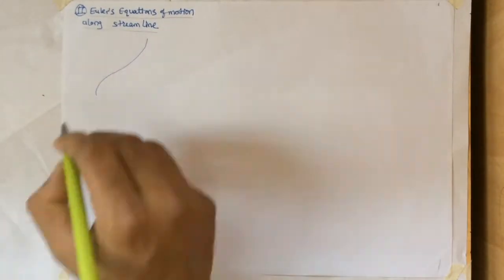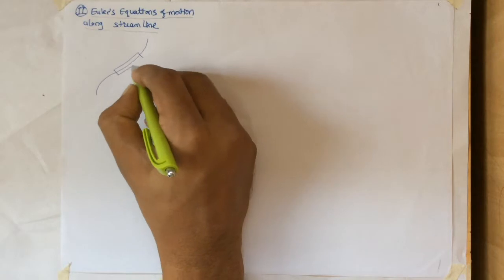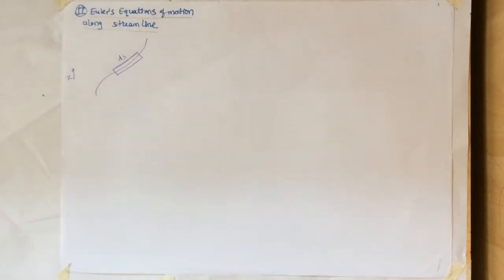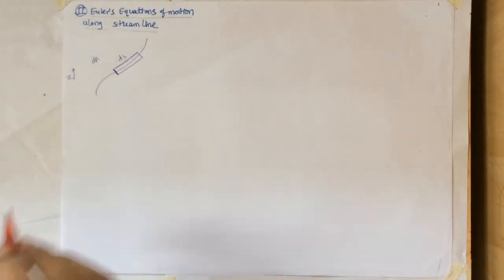So let's have a streamline and a fluid element along the streamline which has the length ds. And this is a positive z direction. We can have cross-sectional area dA.